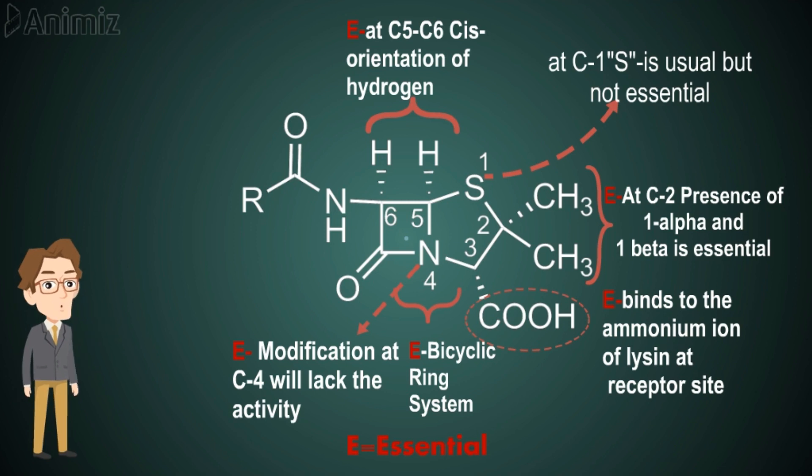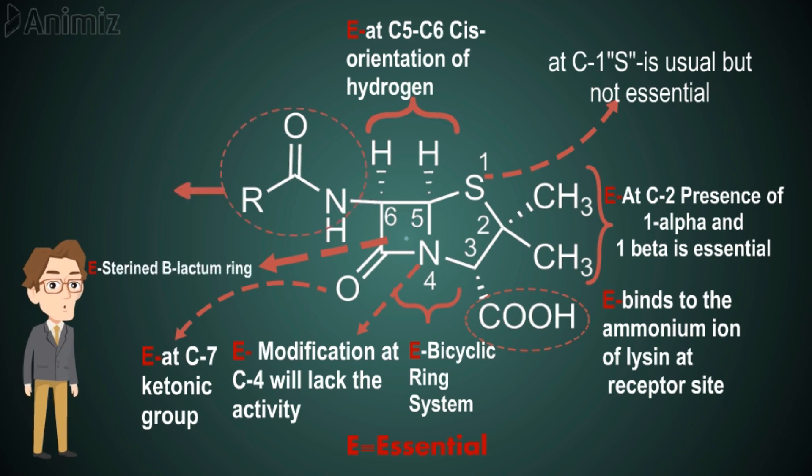At C4, it cannot be modified - if modified, it loses the activity. At C7, the ketone group is essential for activity. The strained beta-lactam ring is essential for activity.